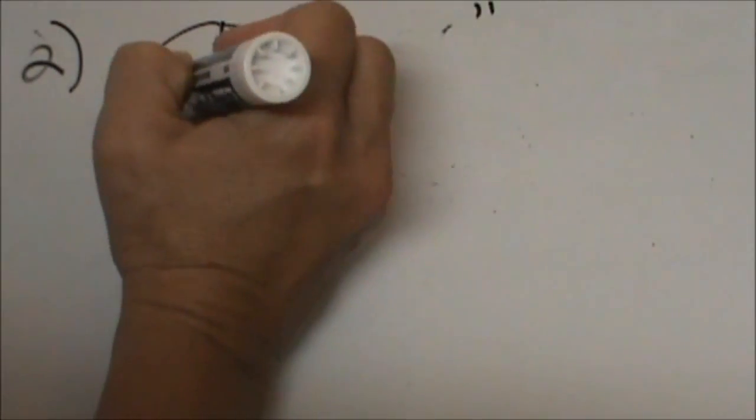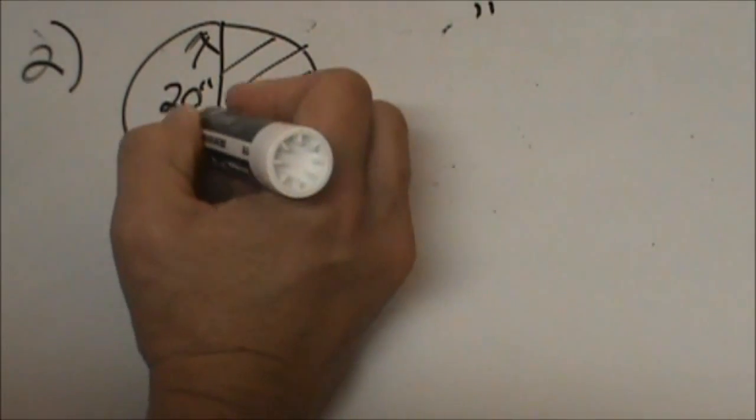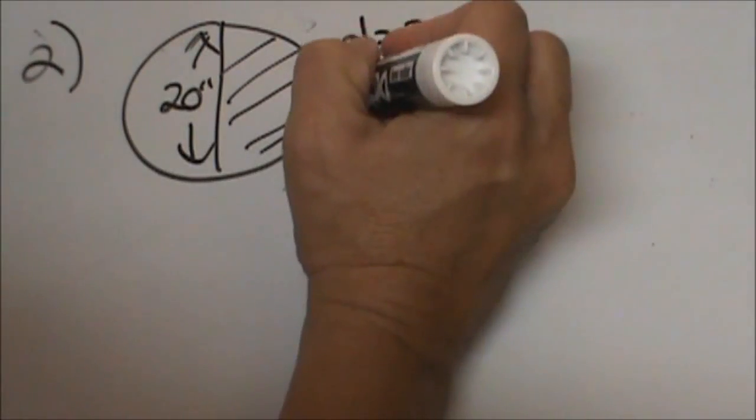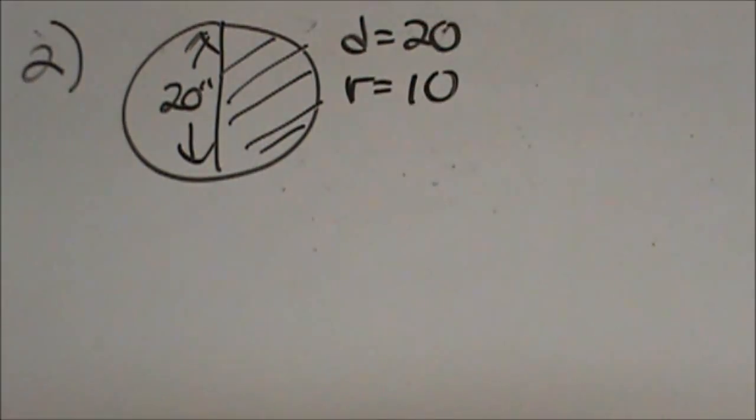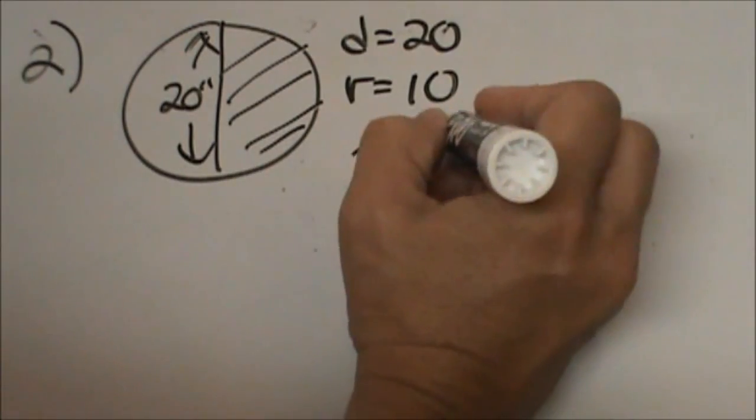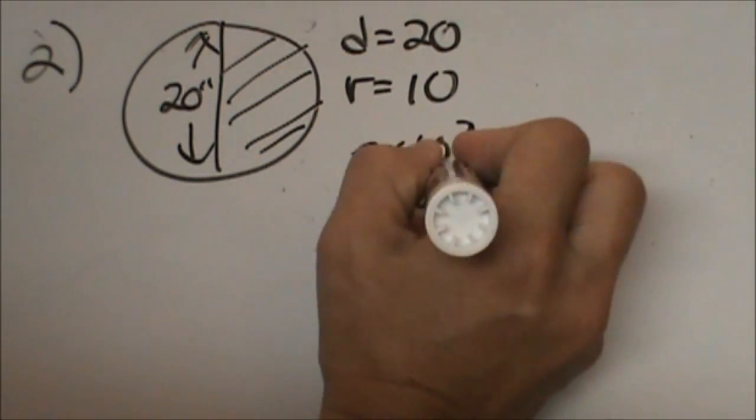Okay, so this time we're given diameter. What is our radius if the diameter is 20? Our radius is 10. Okay, so all we need to do is take pi r squared or pi times 10 squared, 100 pi.